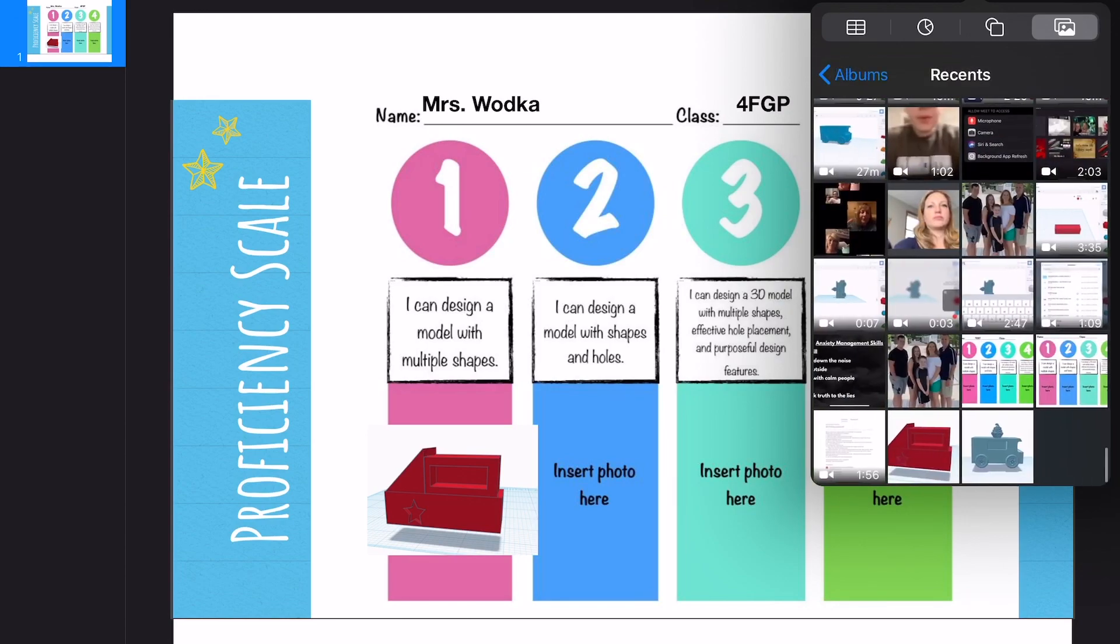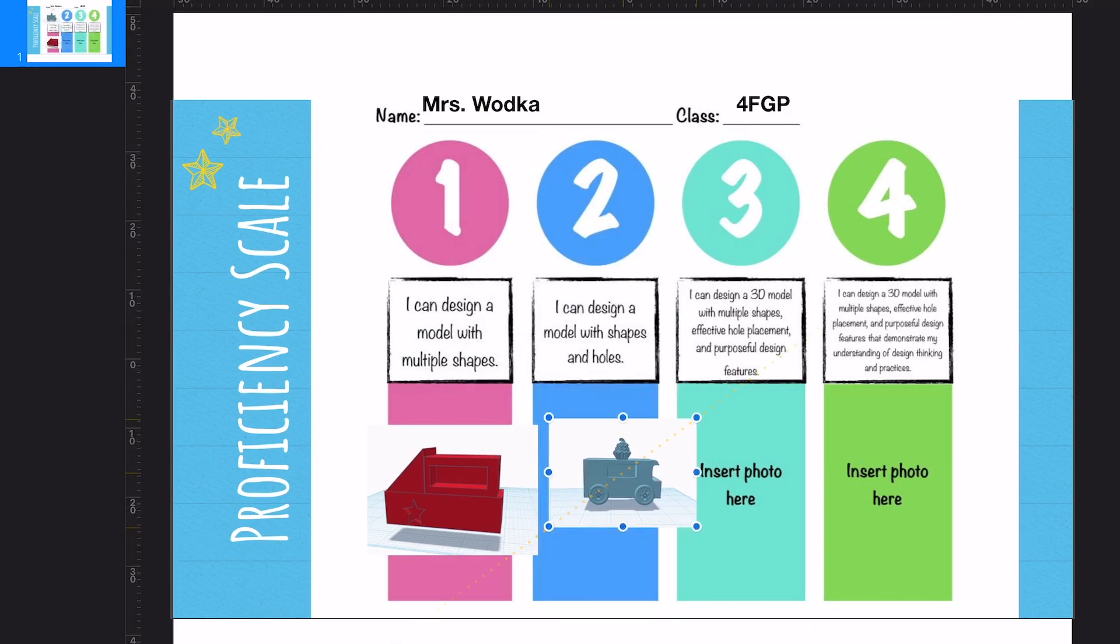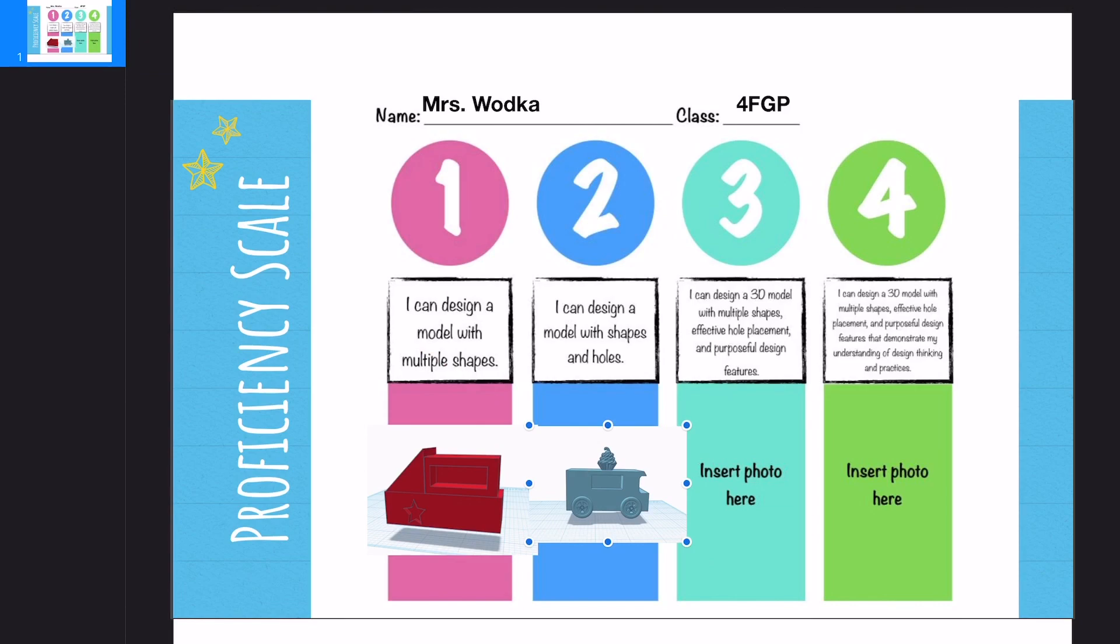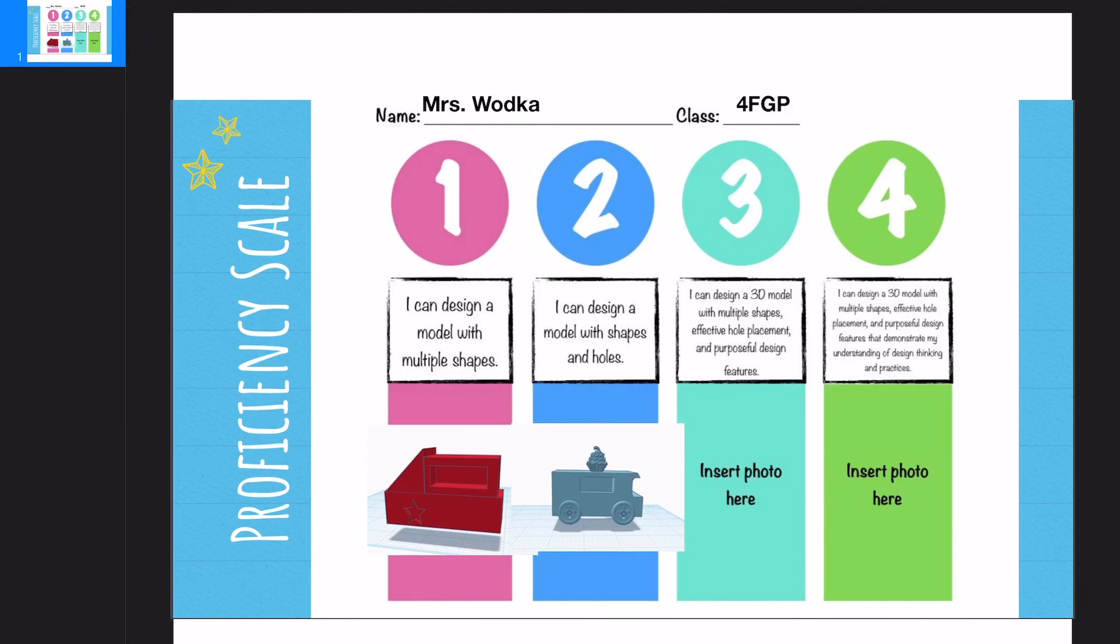And then here is my example. As my food truck gets better, I'm going to go ahead and put it here because it says I can design a model with shapes and holes. And it should, as we keep going through our proficiency scales, you should see yourself improving.